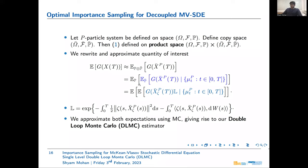We express the quantity of interest as a nested expectation: in the outer loop we take an expectation over all realizations of the particle system, and in the inner loop an expectation over all realizations of the decoupled McKean-Vlasov SDE conditioned on the empirical distribution. We then apply our importance sampling scheme to the inner expectation, introducing a likelihood term from Girsanov's theorem. Both expectations are approximated using Monte Carlo, giving rise to the double-loop Monte Carlo estimator.